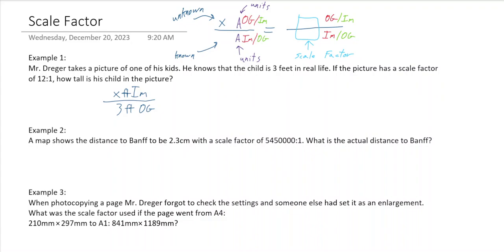We might get a decimal answer, so it could be helpful to convert to inches later. If you have the image on top on the left, it's on top on the right; the OG is on the bottom on both sides. Is the original or image bigger? The original is bigger — the picture is a small thing you can hold, whereas the child is much larger. So original goes on bottom, image on top.